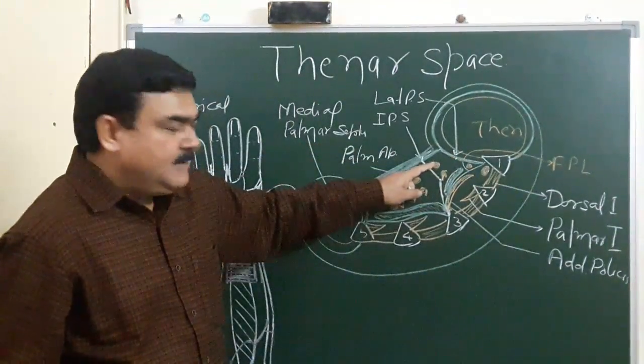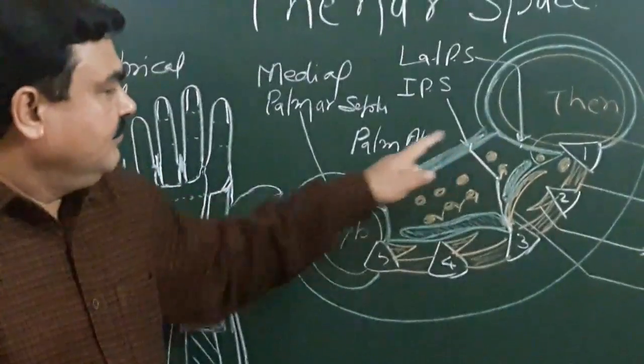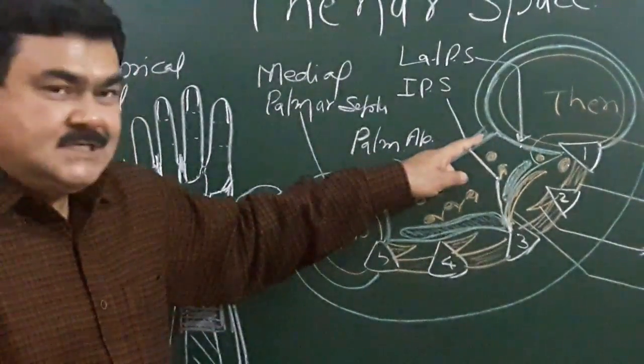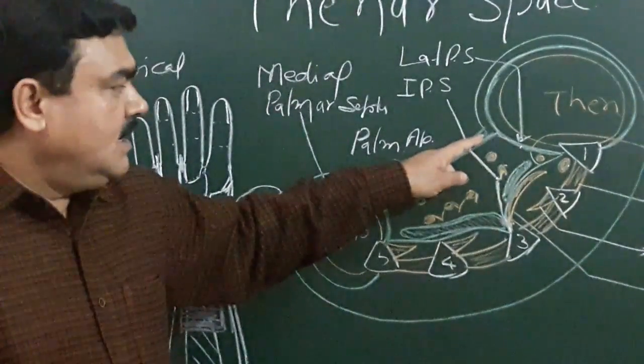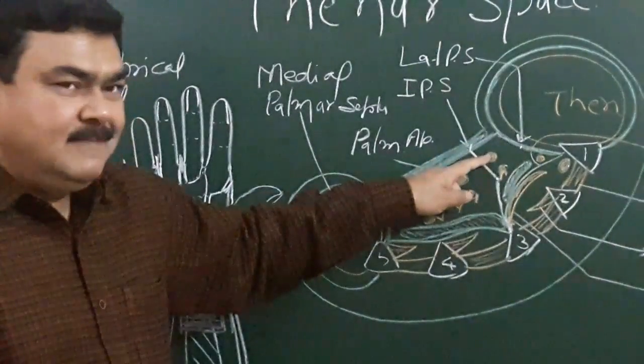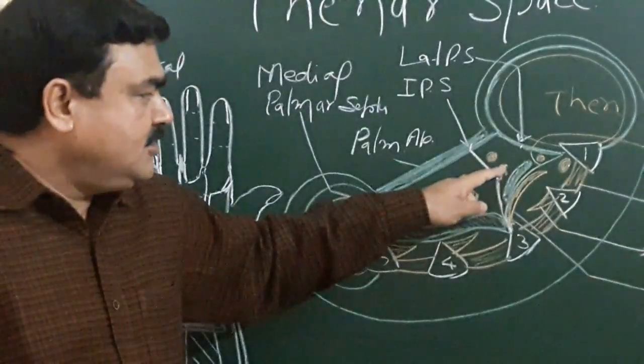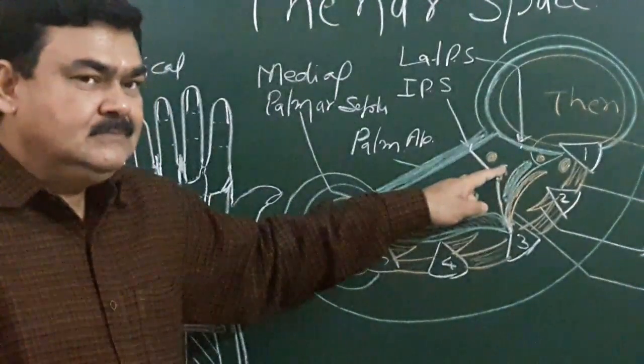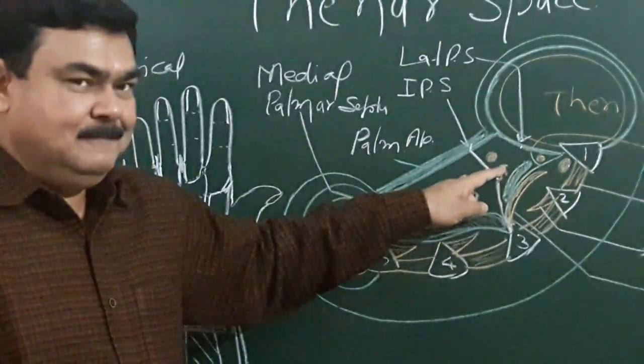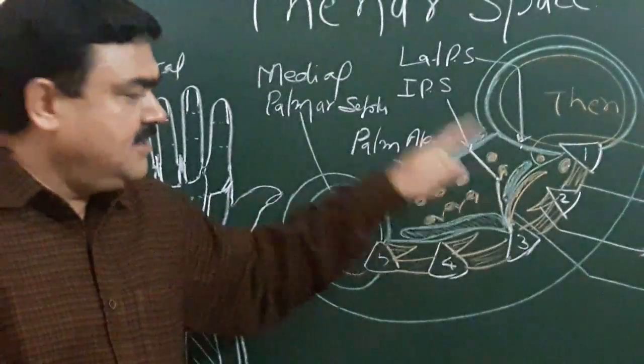Anterior boundary, it is bounded by palmar aponeurosis, long flexor tendon of index finger, that is flexor digitorum superficialis, flexor digitorum profundus, and first lumbrical. These structures form the anterior boundary.